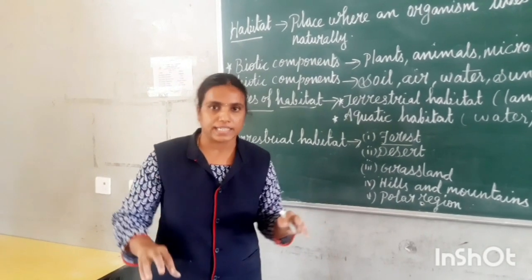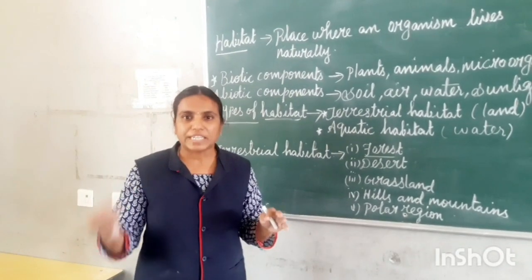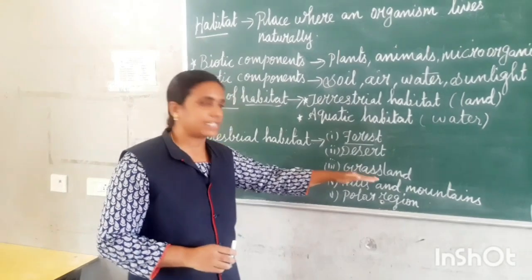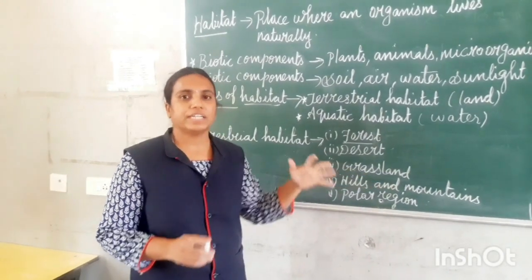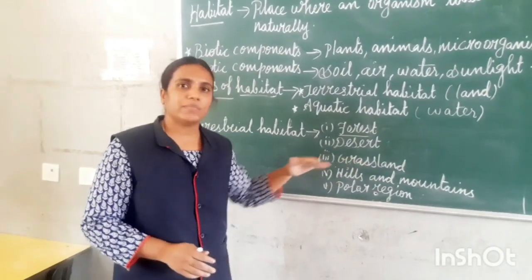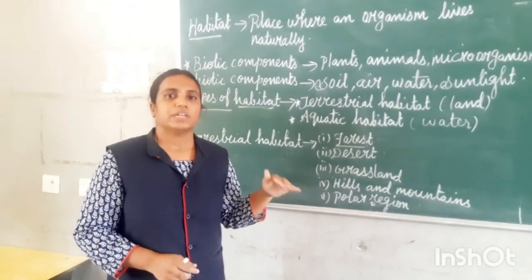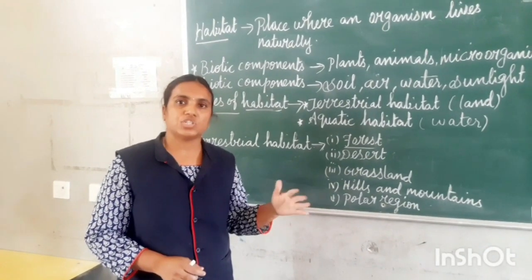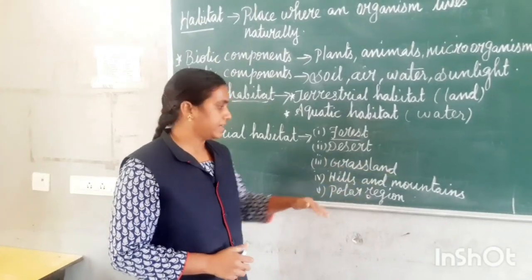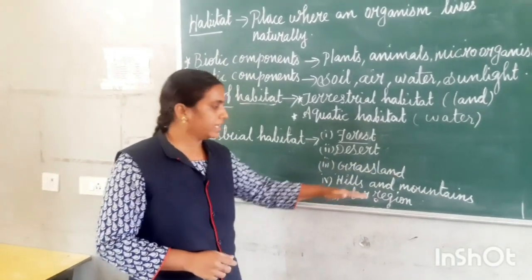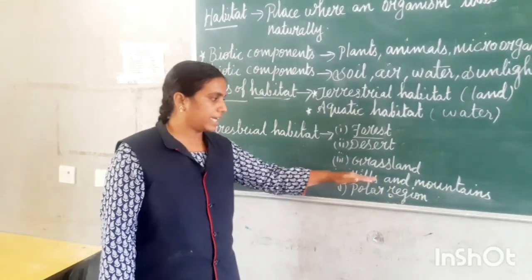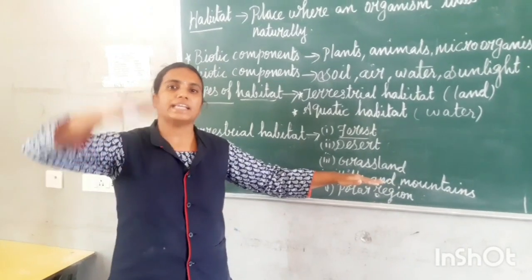Next is grassland. Grasslands are areas fully covered with grasses, some trees and shrubs. The climatic condition is windy and dry. Animals found in grassland include tiger, zebra, lion, and giraffe.